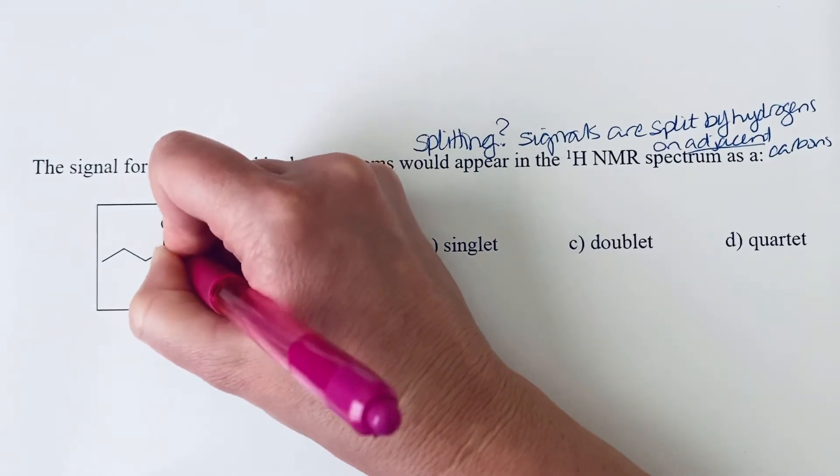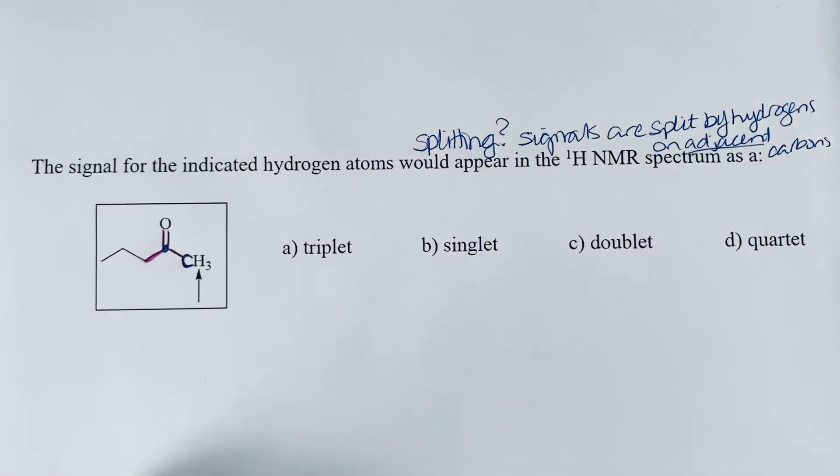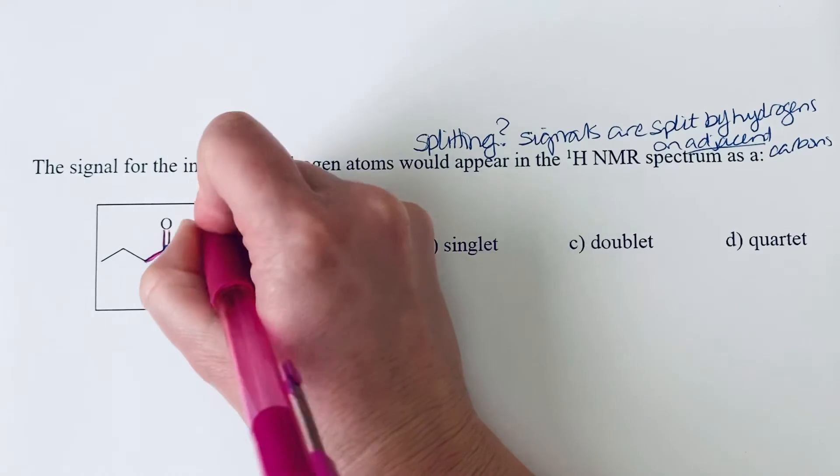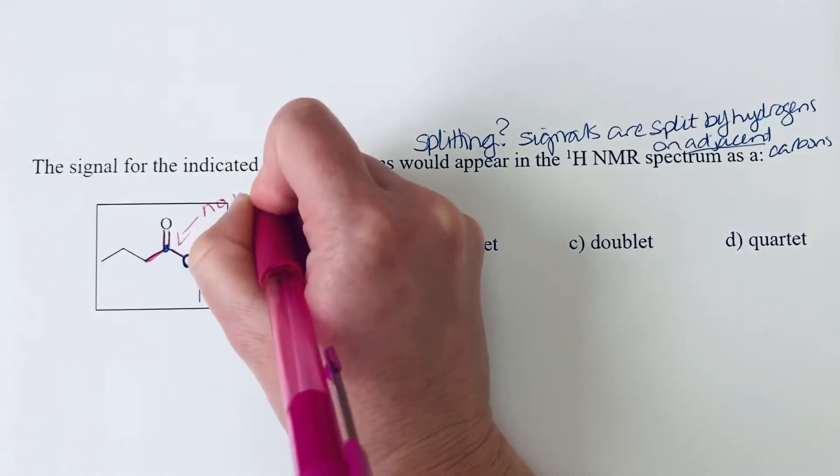We have one, two, three, four bonds already to that carbon, so this carbon has no hydrogen attached to it.